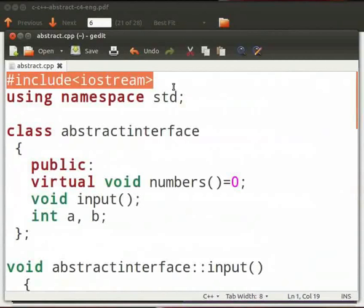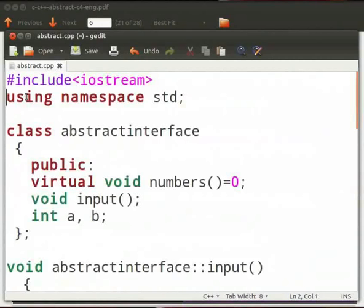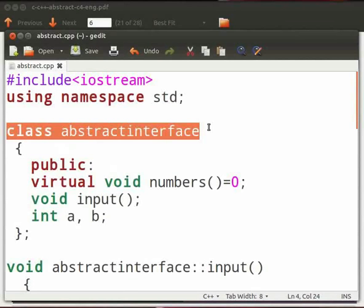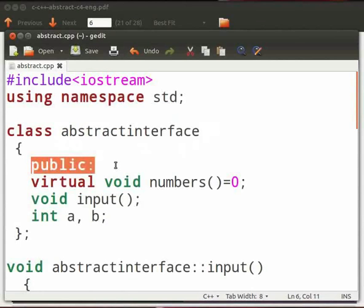This is our header file as Iostream. Here we are using the std namespace. This is declaration for a class named Abstract interface. Then we have public specifier.